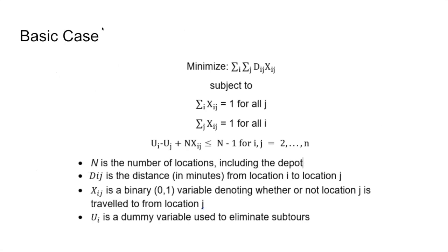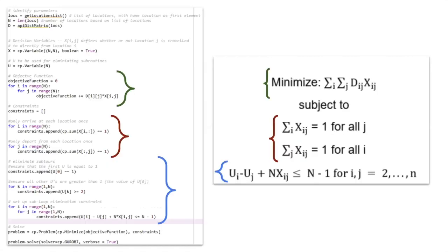The formulation has n locations, a cost or distance between each, and a decision variable x_ij that determines whether you travel from location i to location j. A dummy variable u_i is used to eliminate sub-tours, ensuring every location is visited in one complete route. In CVXpy, you declare variables, append constraints to the problem, and then call a solver.